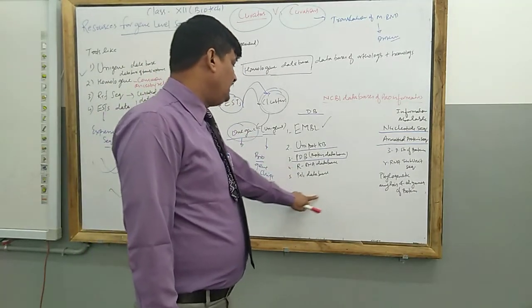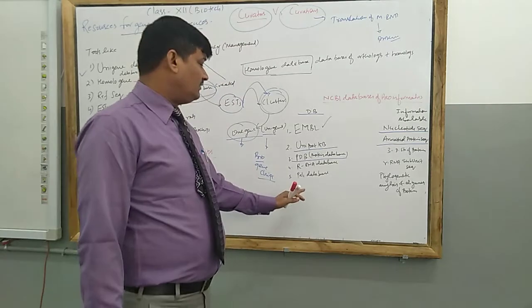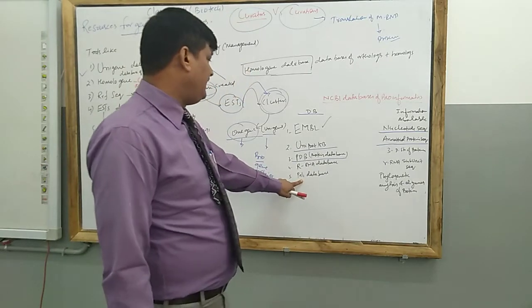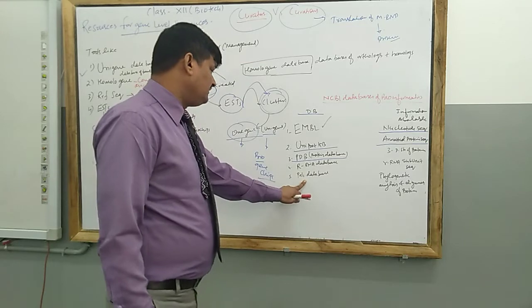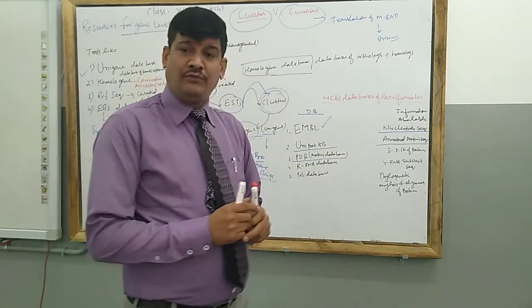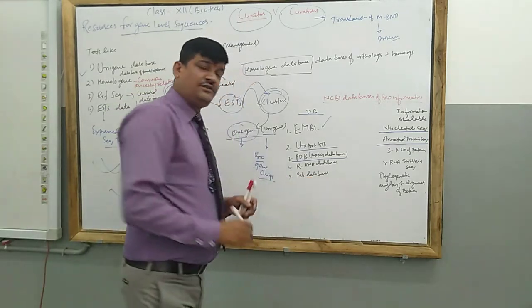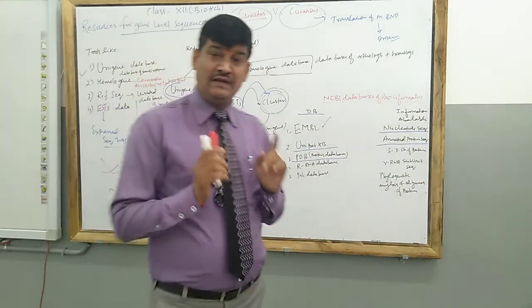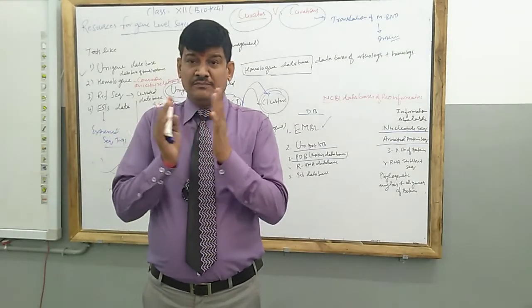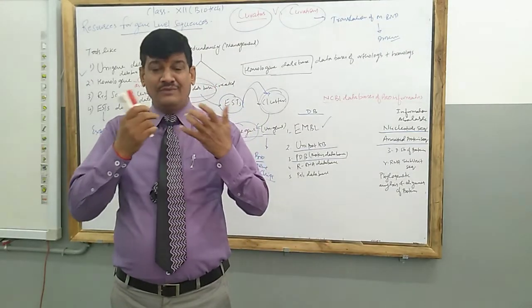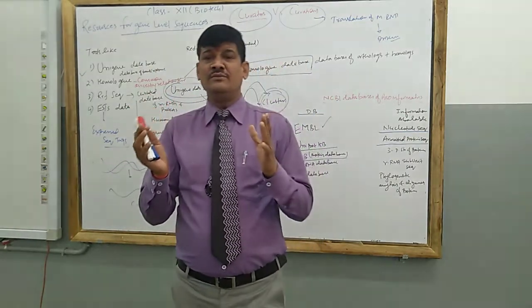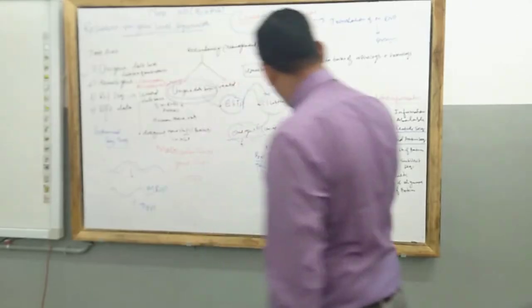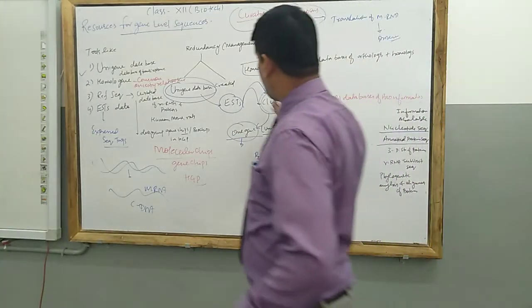The third is PHYLIP database. These PHYLIP databases stand for phylogenetic analysis and this is the alignment of proteins. This PHYLIP database is responsible for phylogenetic analysis and alignment of protein. What is the meaning of phylogenetics here? Phylogenetic means this is made for taxonomical study - in what way organisms are similar or in what way they are dissimilar. This is the database which provides this information.